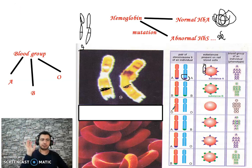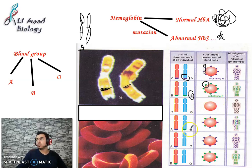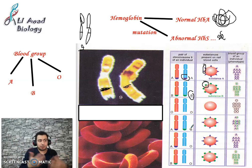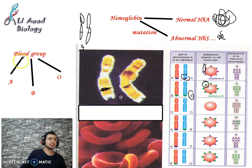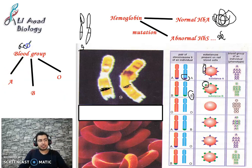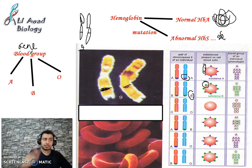Allele A produces protein A via mRNA. Allele B produces substance or protein B. Allele O produces no protein at all — allele O is a mutant abnormal form that makes no protein whatsoever.